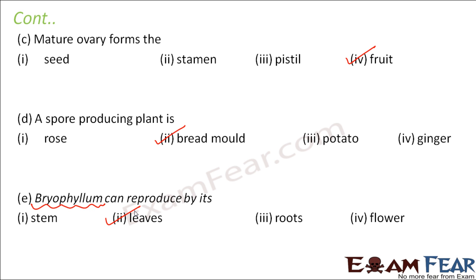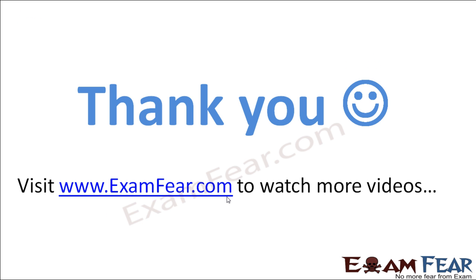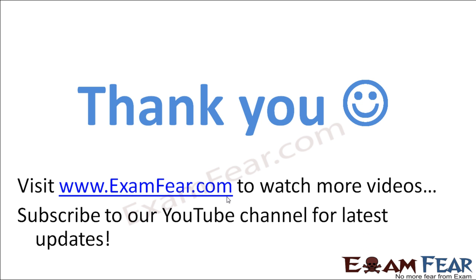With this we have reached the end of this lesson. I hope this lesson on reproduction in plants has helped you. We saw here how plants can reproduce both sexually as well as asexually. To make your learning even more interesting, while going through this lesson you can actually take a flower to understand the structure of a flower, and look at plant behavior to understand these things better. See you all in the next lesson. Thank you. Please visit examfear.com to watch more educational videos. Please do not forget to like and subscribe to our YouTube channel for latest updates. Thank you once again.